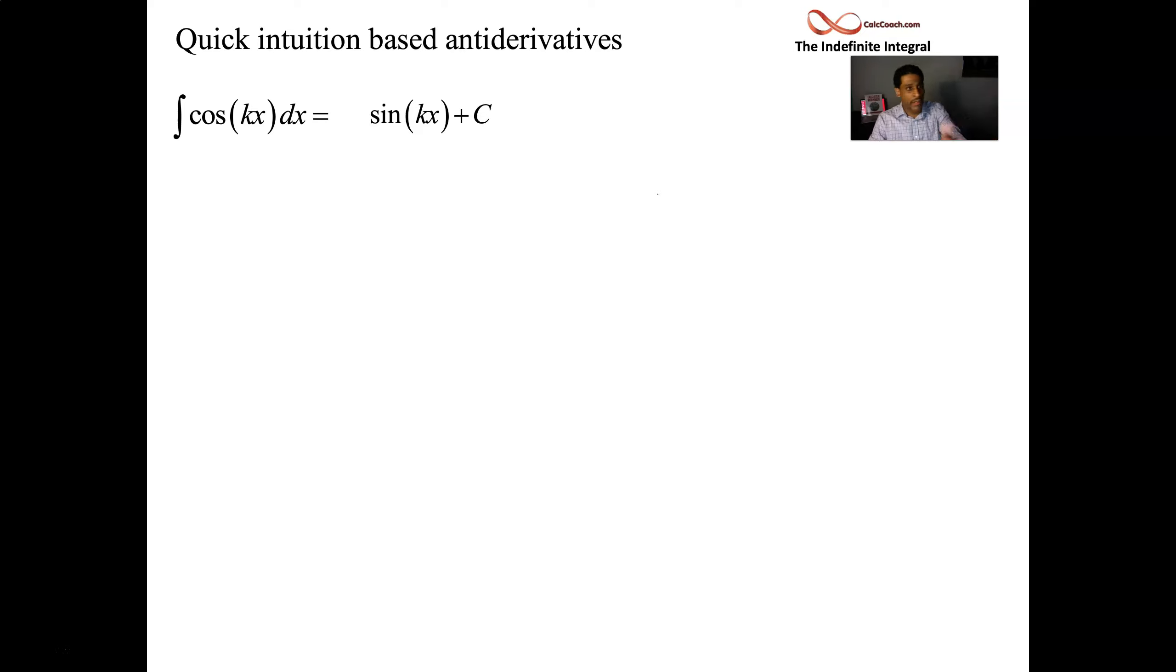There's no k in any of this. So to balance out that k that's going to come in from the chain rule, we need a 1 over k.